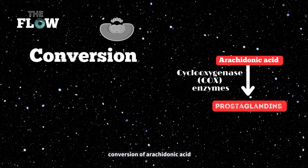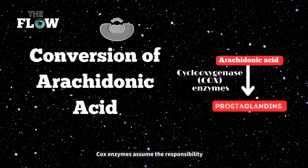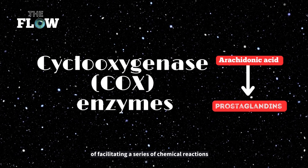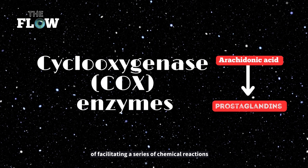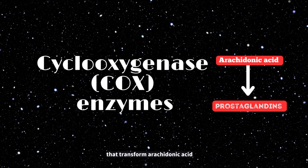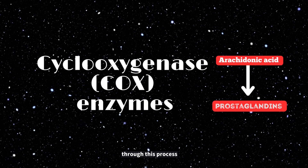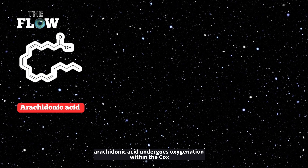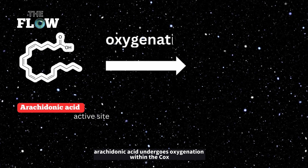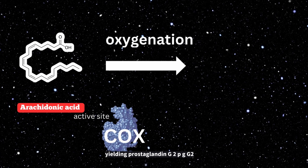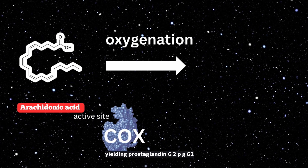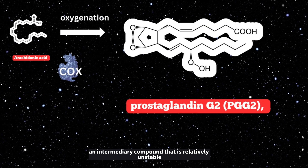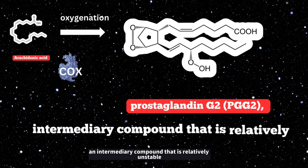Conversion of arachidonic acid: COX enzymes facilitate a series of chemical reactions that transform arachidonic acid. Arachidonic acid undergoes oxygenation within the COX enzyme's active site, yielding prostaglandin G2 (PGG2), an intermediary compound that is relatively unstable.